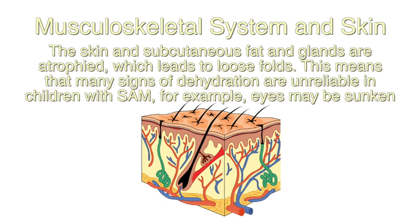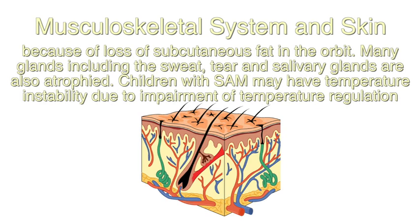Regarding the musculoskeletal system and skin: the skin, subcutaneous fat, and glands are atrophied, leading to loose folds. This means that many signs of dehydration are unreliable in these children — for example, eyes may be sunken because of loss of subcutaneous fat in the orbit. Many glands including sweat, tear, and salivary glands are also atrophied. Children with severe acute malnutrition may have temperature instability due to impairment of temperature regulation.